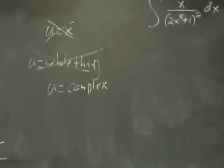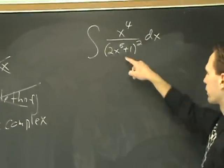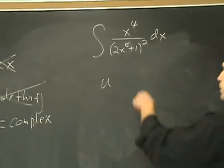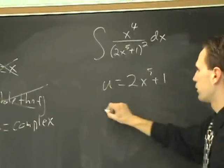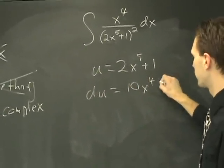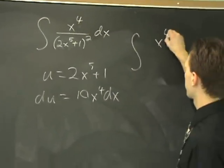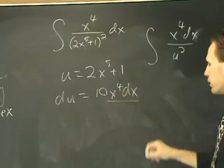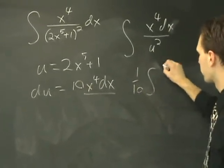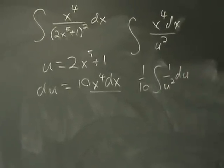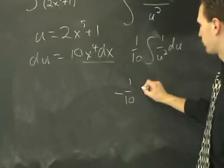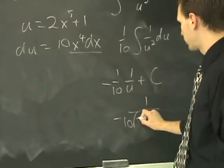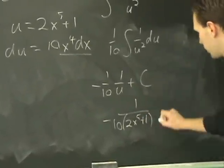Let's do this one last problem. How should we choose u? We've got the fifth power and the fourth power, so that suggests u equals x to the fifth. But we don't lose anything by grabbing the 2 and the 1, so we may as well do that: u equals 2x to the fifth plus 1. Then du equals 10x to the fourth dx. Do the rewrite and you'll have the integral of x to the fourth dx over u squared. x to the fourth dx can be replaced with one tenth du. The whole thing goes to one tenth times the integral of one over u squared du, which anti-differentiates to negative one tenth times one over u plus a constant. Finally, replace u with what it originally was and you get negative one over ten times 2x to the fifth plus 1, plus a constant.